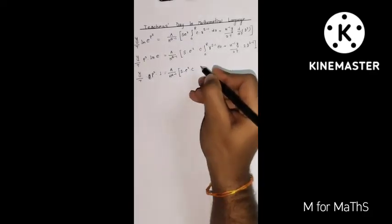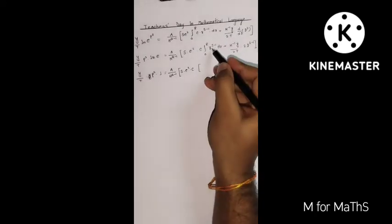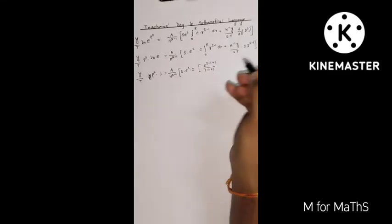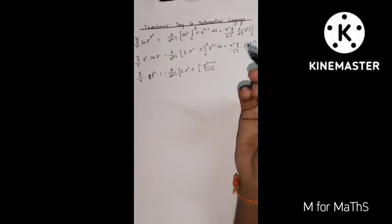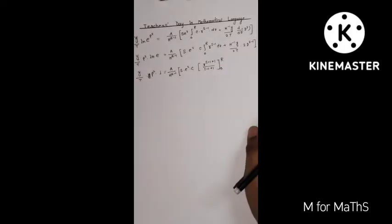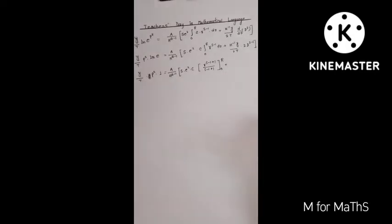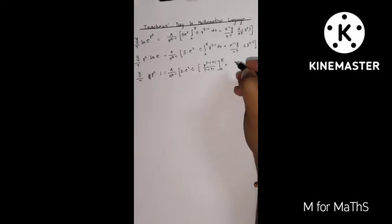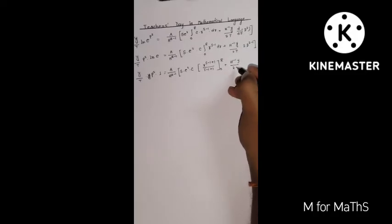Now integrating r to the power (s minus 1): using the formula, it becomes r to the power (s minus 1 plus 1) divided by (s minus 1 plus 1), which simplifies to r to the power s divided by s, evaluated within the limit 0 to R. This is a definite integral. In an indefinite integral you would need a constant of integration, but I have taken only the definite integral here to avoid disturbing the final result. The remaining term is h-inverse times y by 2t.